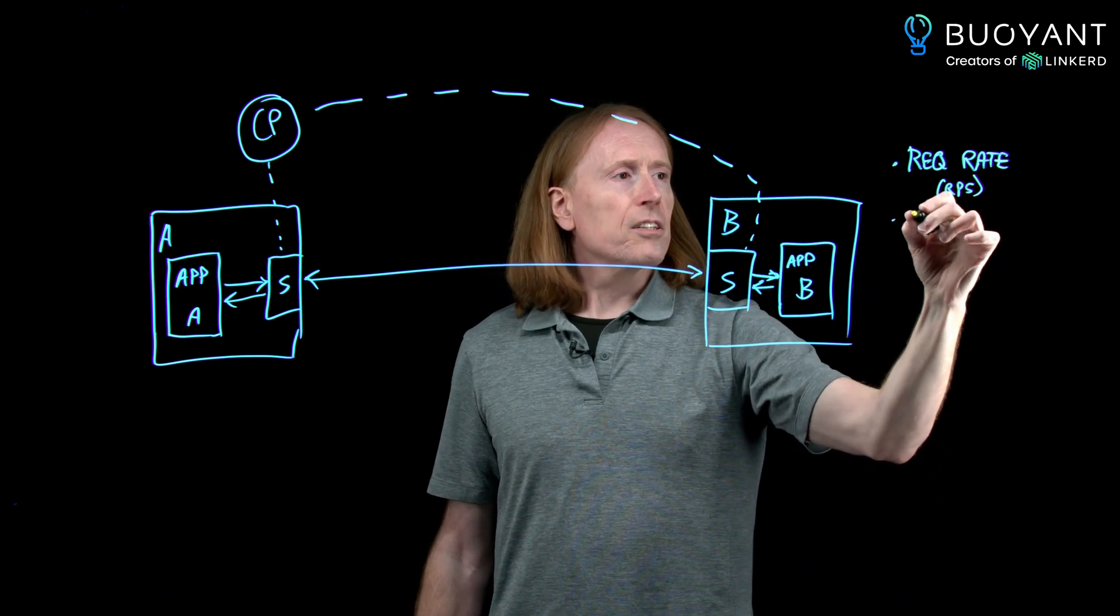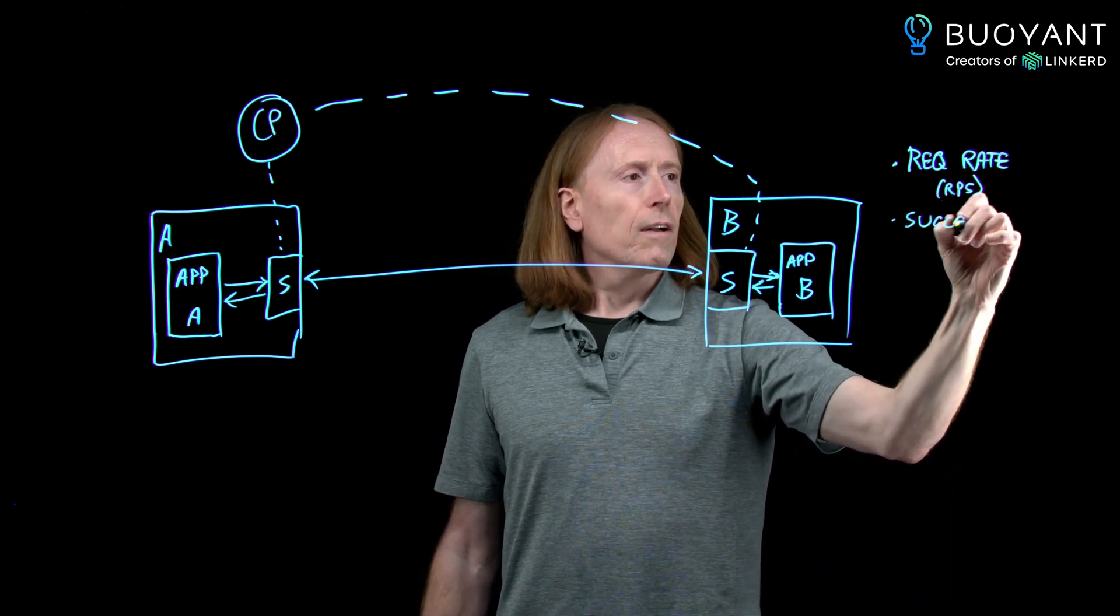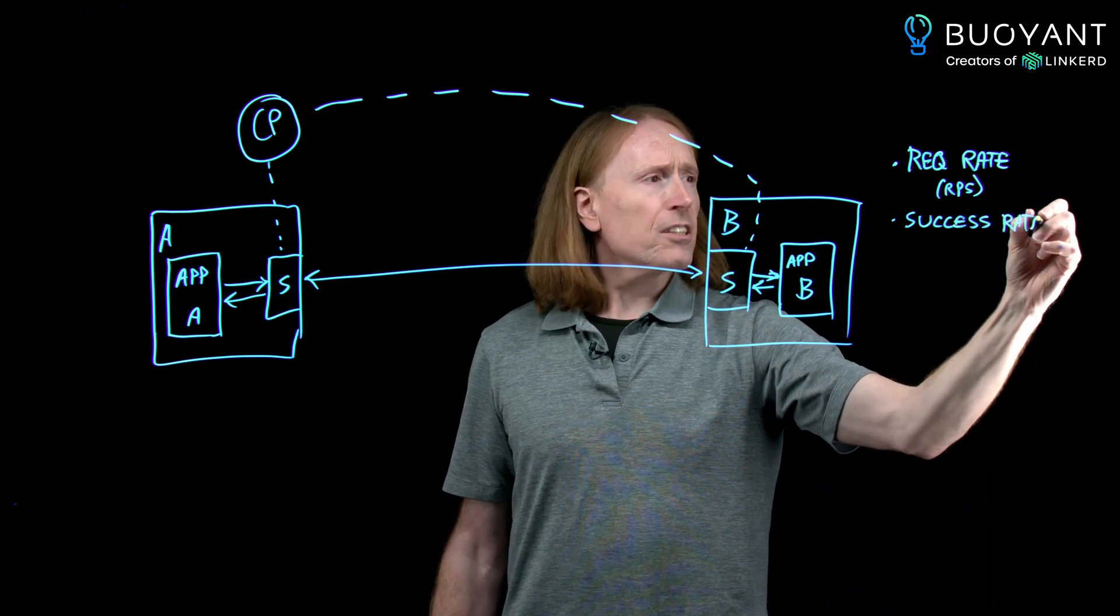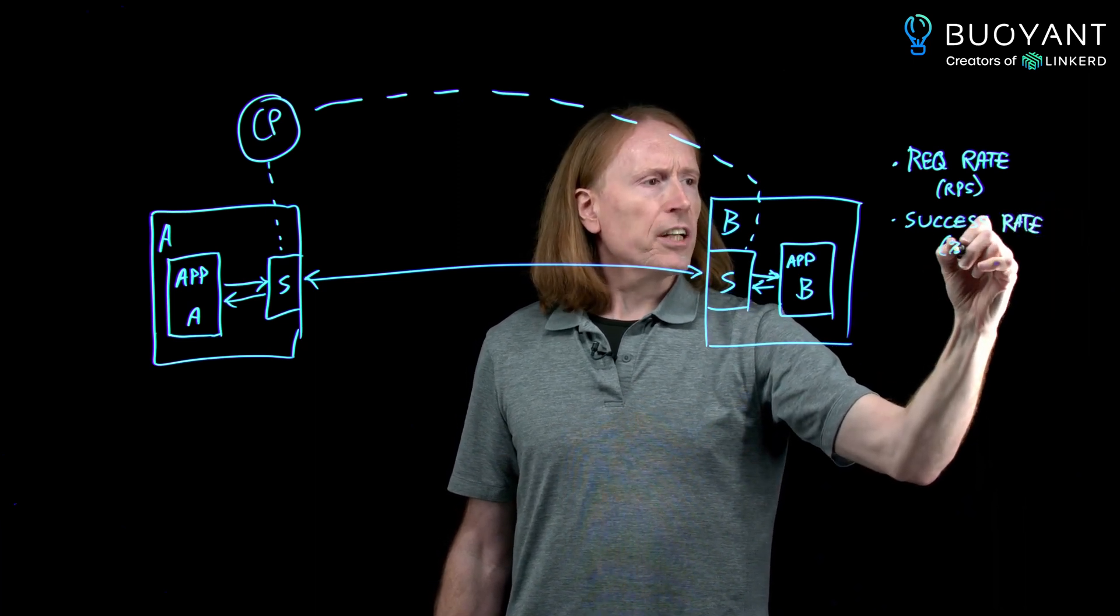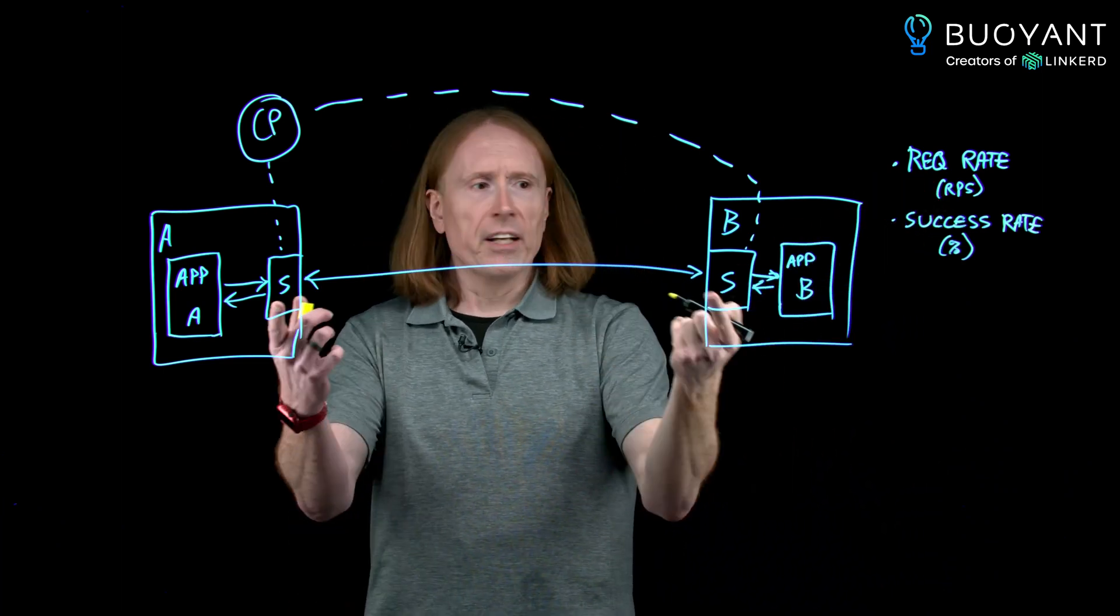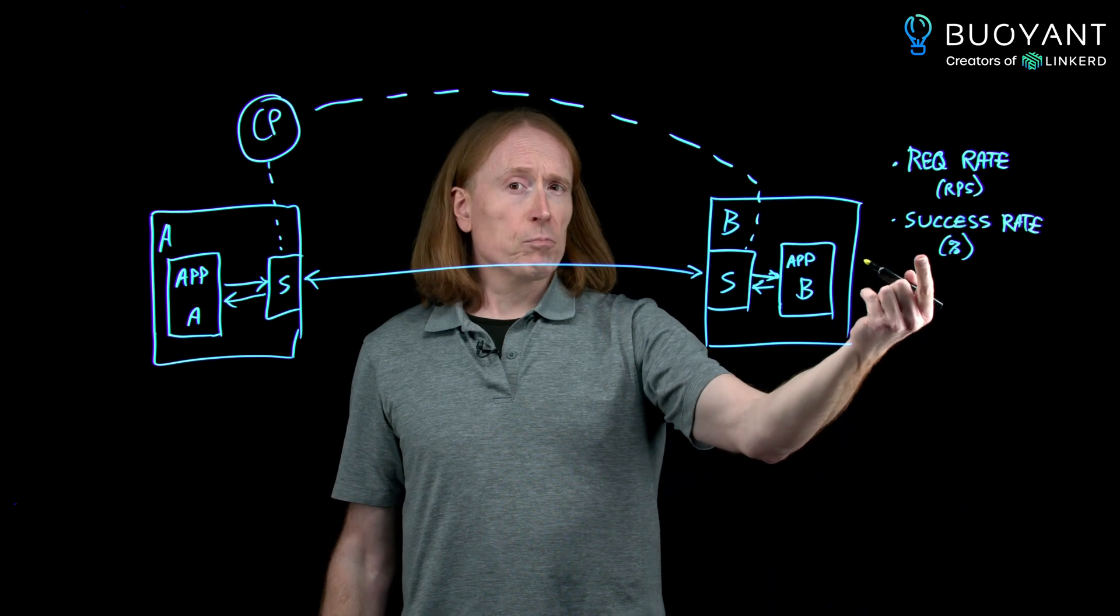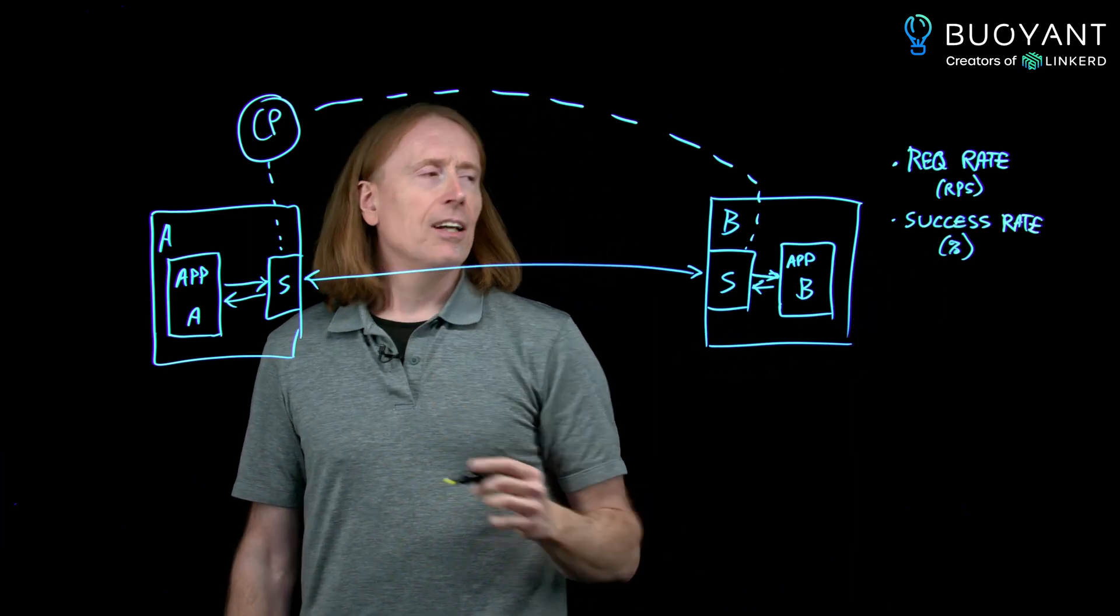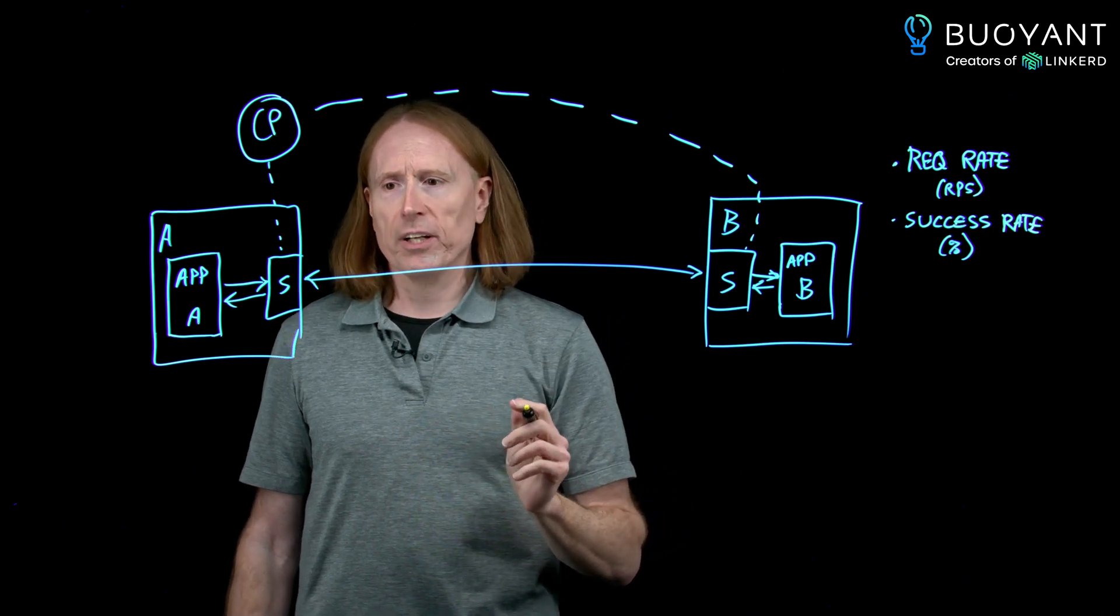Another one is the success rate. Sometimes that gets measured as an error rate, but it's the same thing. That will be a percentage. Basically, this is pretty simple. How many requests happened in this time? We can count that. But since the sidecars also see the individual requests and the responses, they can also calculate the success rate easily.